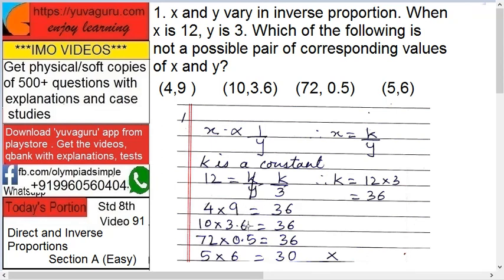10 into 3.6 is 36, that is also okay. 72 into 0.5 is 36. 5 into 6 is 30. So this value can't be there, because we want the answer to be 36. So the answer is option with 5 and 6.